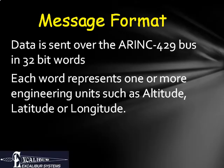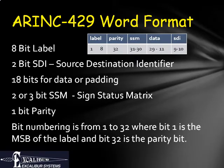All data transmitted over ARINC 429 is in the form of 32-bit words. Typically a word contains a single engineering value, though occasionally secondary values may be included as well. Each word contains an 8-bit label, at least two bits indicating the sign or status of the data, and a parity bit. Some labels also contain a 2-bit source destination identifier, or SDI. Any remaining bits are used for the data.